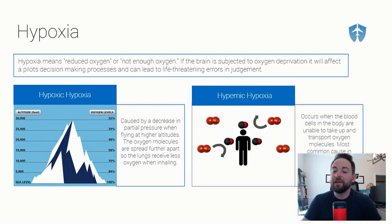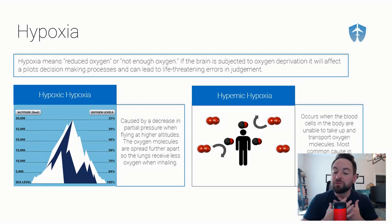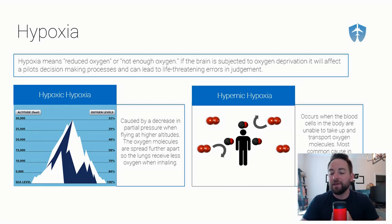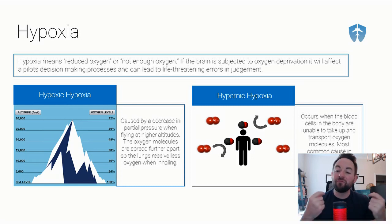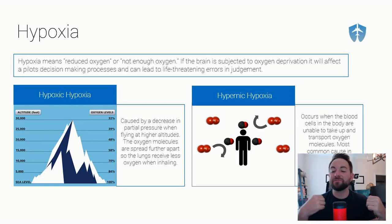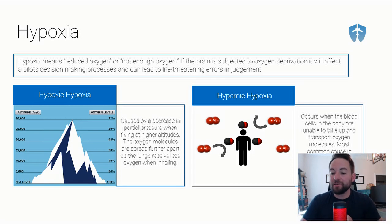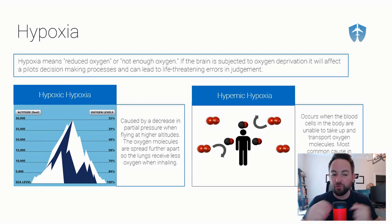The second one is called hypemic hypoxia. Hypemic hypoxia occurs when the blood cells in the body are unable to take up and transport oxygen molecules. There may be plenty of oxygen molecules in the environment around you — say you're down at sea level — so when you breathe in you're getting a lot into your lungs, but for some reason those oxygen molecules are not attaching themselves to your blood cells to be transported throughout your body. The most common cause in flying is carbon monoxide poisoning, because carbon monoxide attaches itself to your blood cells.